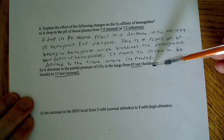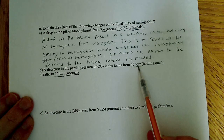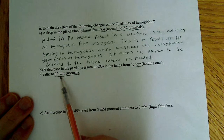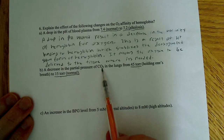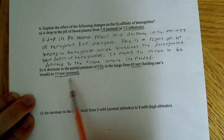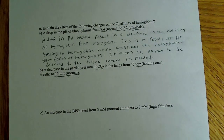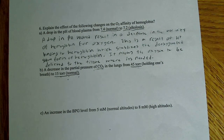If CO2 normally stabilizes the deoxygenated state, then going from higher partial pressure to lower partial pressure means less CO2 is available to bind to hemoglobin. If the partial pressure is lower, there's a lower concentration of CO2.